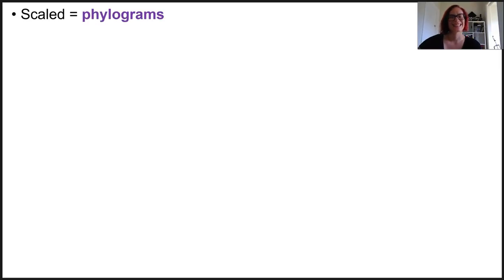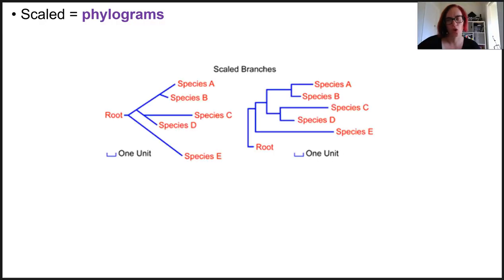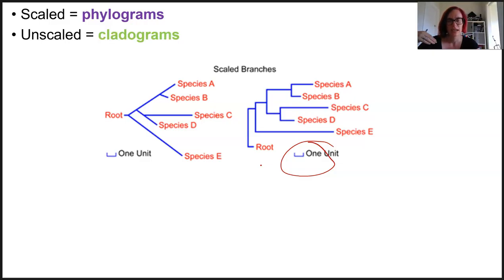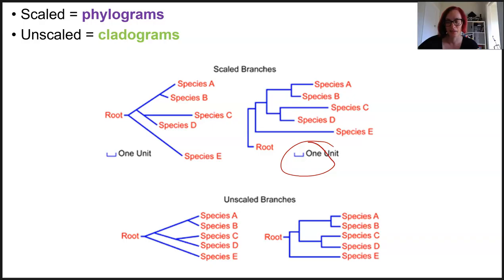Phylogenetic trees are either scaled or not. The ones with scales are called phylograms, and the branch length indicates the amount of time or genetic changes that have accumulated — it represents the amount of evolutionary divergence between groups. Those trees without scales are known as cladograms, and the branch lengths don't mean anything — they are not proportional to evolutionary change. Note that QCAA uses the term cladogram as a coverall for both cladograms and phylograms.